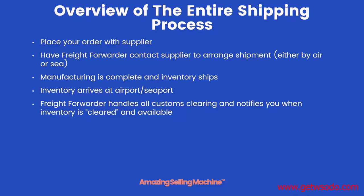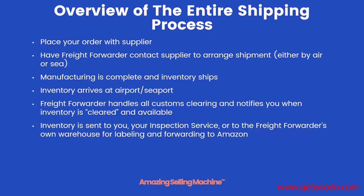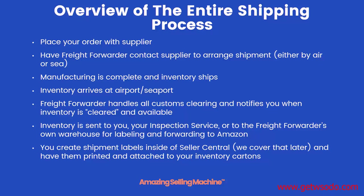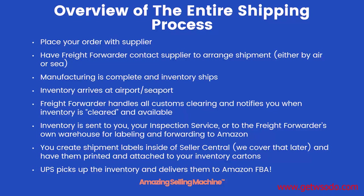Importing and sending products to Amazon doesn't have to be intimidating. Here's a quick overview: you place your order with your supplier and have your freight forwarder contact them to arrange shipment details. Manufacturing completes roughly 30 days later and inventory ships out. Your freight forwarder handles all customs clearing and notifies you when inventory is available. It's then sent to your home, inspection service, or freight forwarder's warehouse, where it's labeled and forwarded to Amazon. You create the shipment labels in Seller Central, they get attached to your cartons, and UPS delivers them to Amazon's FBA warehouse.